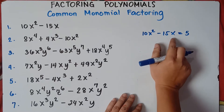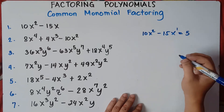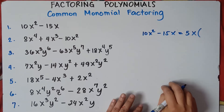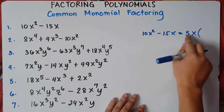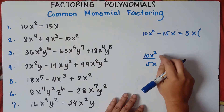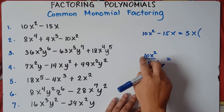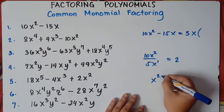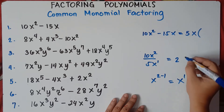Now for the variable, just select the variable with the least degree, with the least exponent. That is x, because x here has an exponent of 1. So we will be selecting x. Then you put parentheses. The GCF is 5x. Now divide: 10x squared divided by 5x. For the variable, if you divide, you simply subtract the exponents. Exponent here is 1. So 10 divided by 5 is 2, and x squared divided by x is x raised to the power of 2 minus 1, which equals x. So the answer for the first term is 2x.